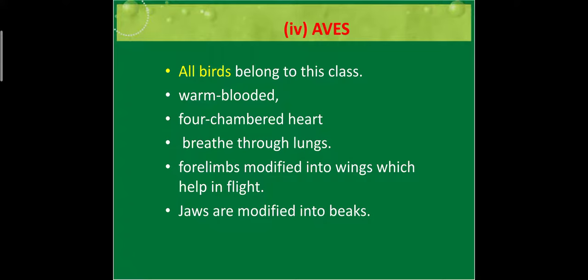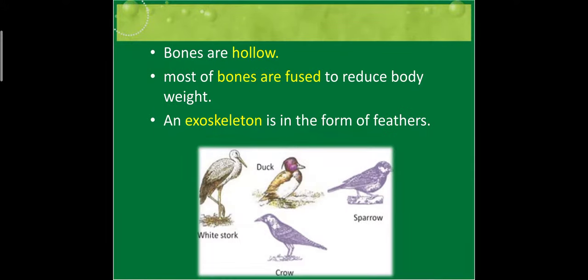The jaws — our up-and-down movement of the mouth — are modified into beaks which help them consume food. Their bones are hollow and most bones are fused to reduce body weight so they can fly higher. All birds fall in this category. They have an exoskeleton in the form of feathers. Examples: white stork (Ciconia), male tufted duck (Aythya fuligula), ostrich, pigeon, sparrow and crow.